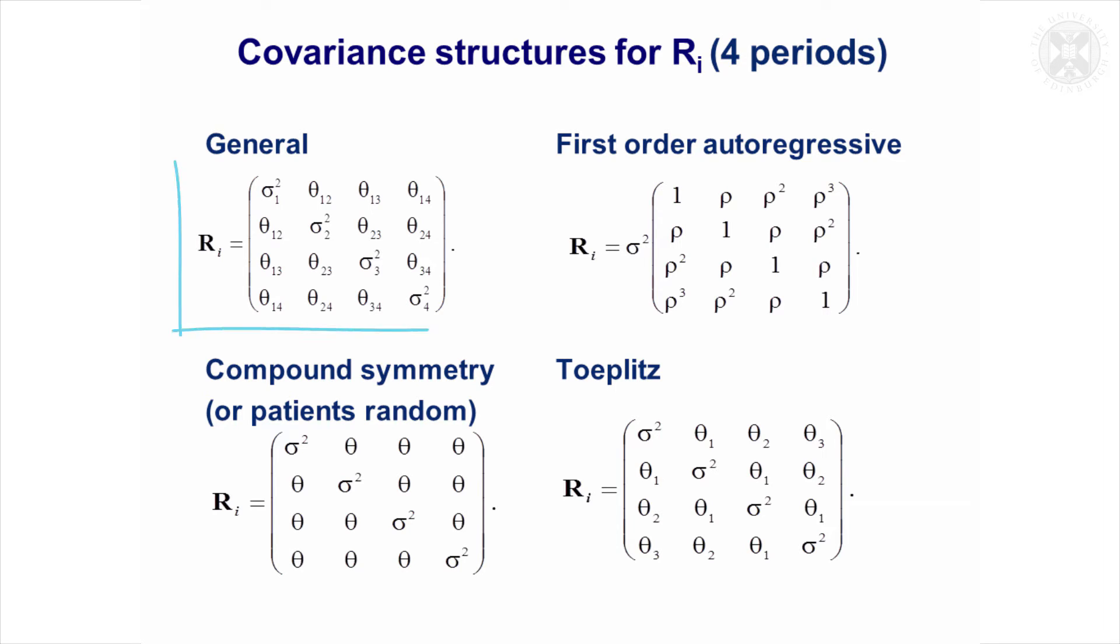In this structure, this is called a general structure because we're going to have a different covariance for each pair of time points. We've got different variances down the diagonal, and then on the off diagonal this is the covariance between time point one and time point two, and then between time point one and time point three, and so on.